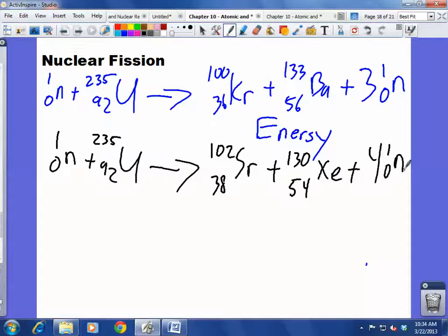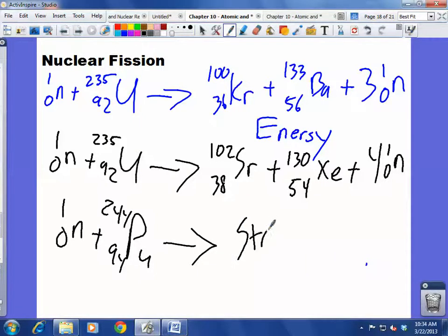So fusion doesn't do that. But if we keep going here a little bit, okay, uranium is not the only thing that can undergo fission. We can also have something like plutonium. So the only other thing I could ask you on the test or what I want you to know is let's say this time we had strontium again, 102, 38. I think my handwriting is getting worse here. But then what would come out if we had three neutrons created?